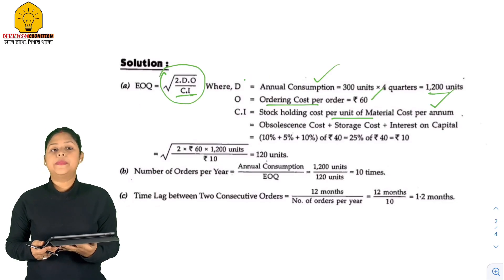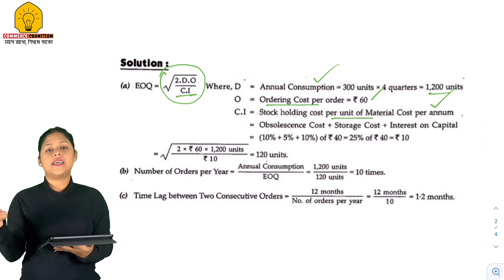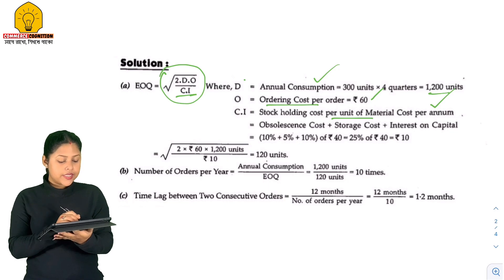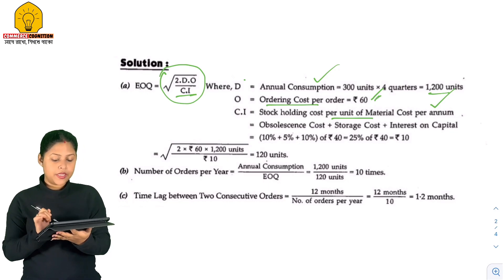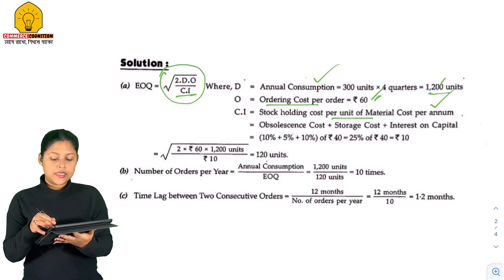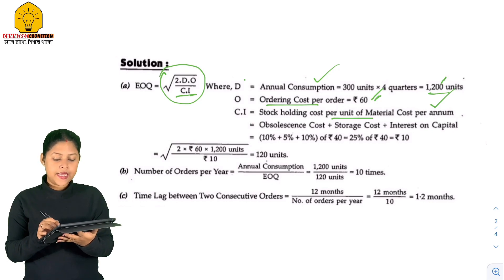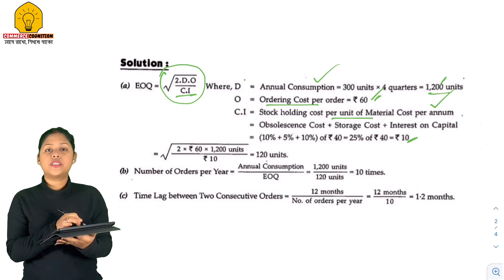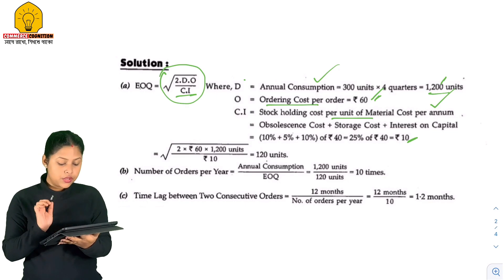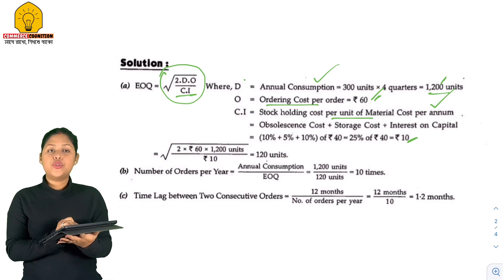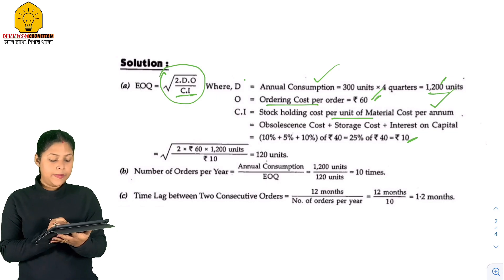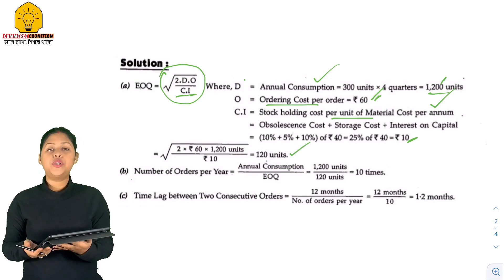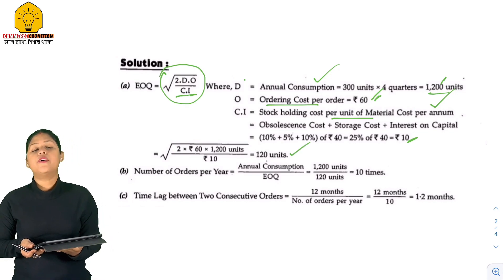So let's look at the EOQ formula. EOQ equals the square root of 2 into Rs.60 into 1,200 divided by 10. Let's calculate: 60 into 2 into 1,200 divided by 10 — the square root of that total calculation equals 120 units. So the total EOQ is 120 units.